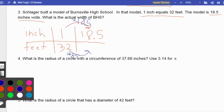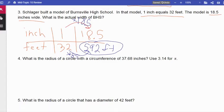32 feet times 18.5 is 592, 592 feet. And I will circle my answer. That's how wide BHS is.